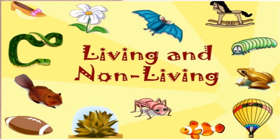Now when you go outside you see a lot of plants, you see a lot of trees, you see a lot of animals — you see dogs, cats, rats, etc. All these things come under living things.